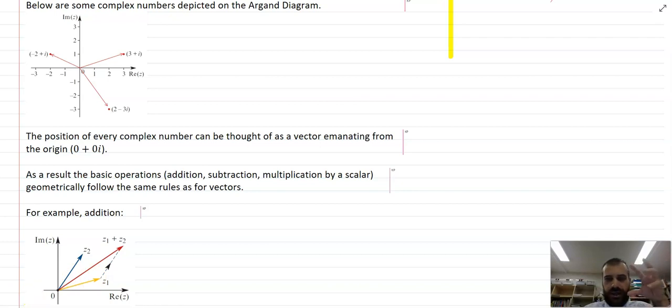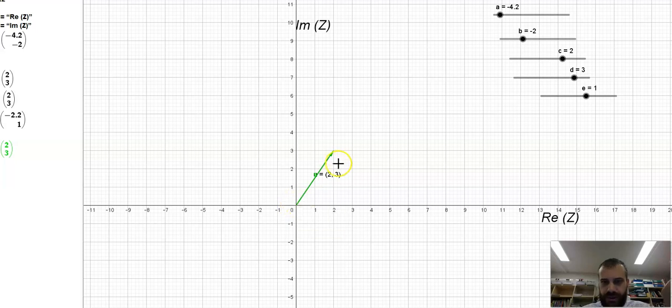We can also just take a complex number and multiply it by a scalar. So here's a complex number, two plus three i. Now what I'm going to do is multiply it by a scalar. So here's my scalar here.